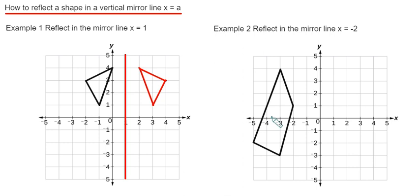Let's move on to example 2 then. So this time our mirror line is x equals minus 2. So this will be a line going through the x axis at minus 2. So let's draw this line in here.